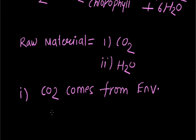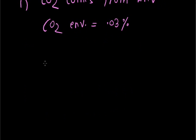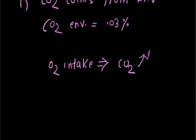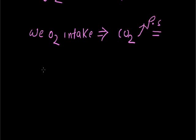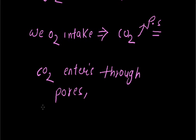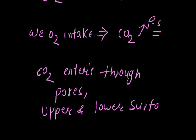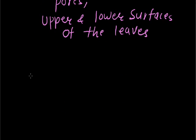CO2 comes from the environment. The amount of CO2 in the environment is about 0.03%. We breathe — we intake oxygen and release CO2, which is used in photosynthesis. Human beings intake oxygen and release CO2, which is used in photosynthesis. Now, how does this intake happen? The CO2 enters through pores. These pores are present on the upper and lower surface of the leaves. The number of pores are called stomata.